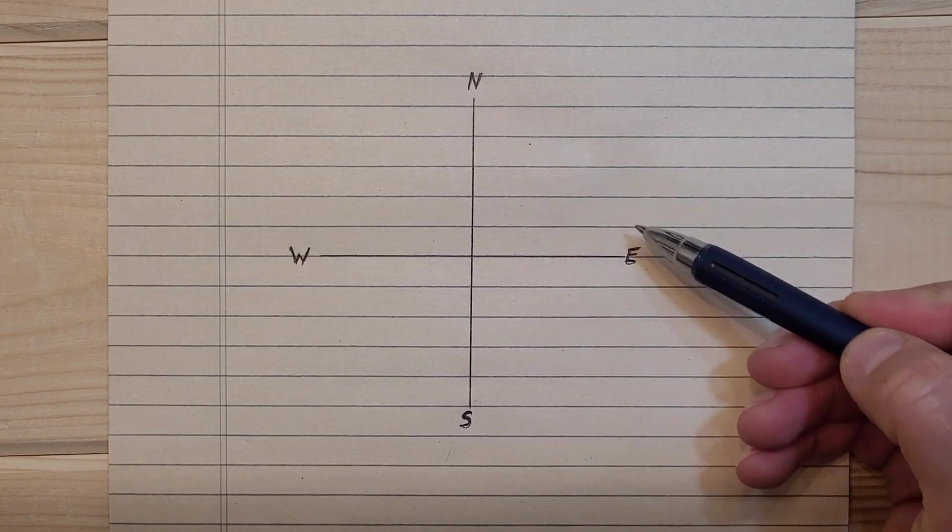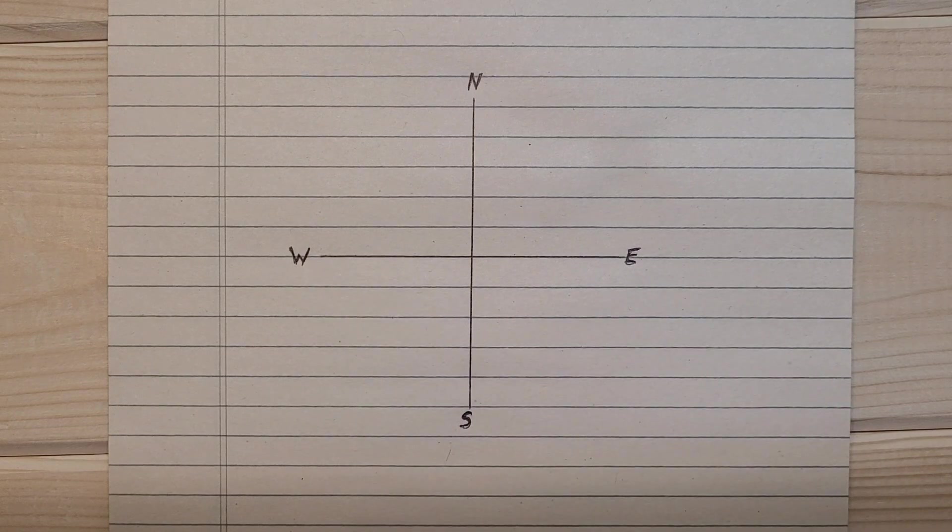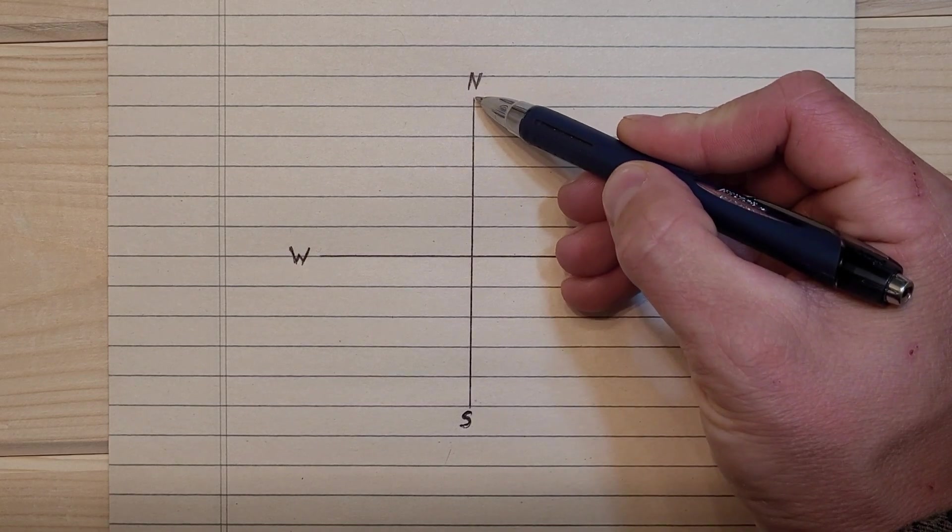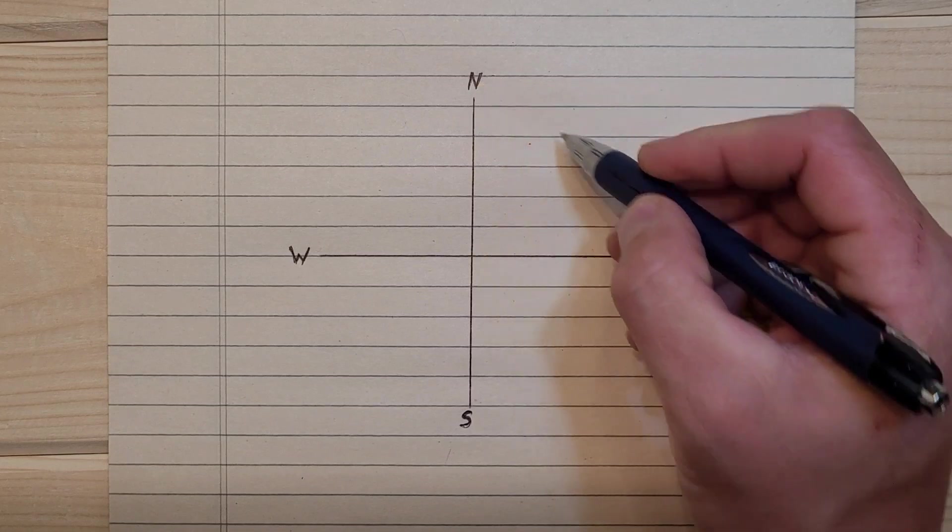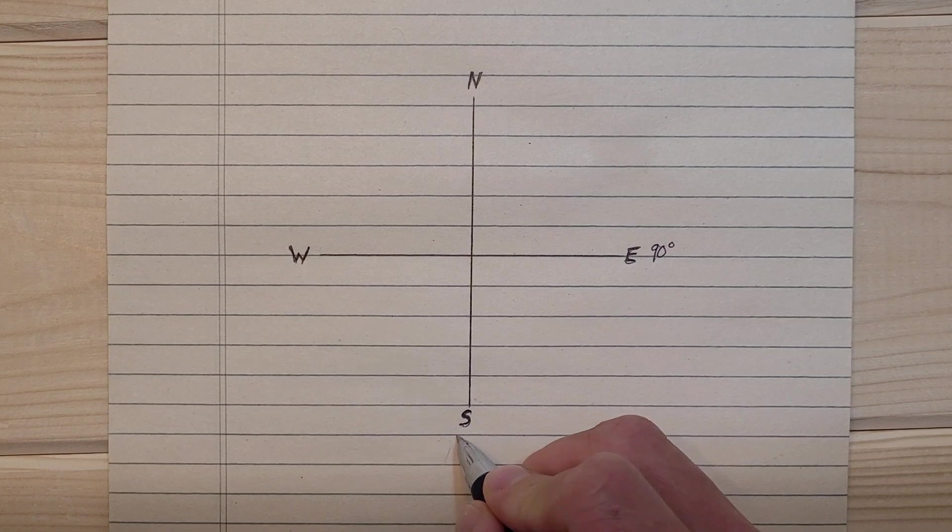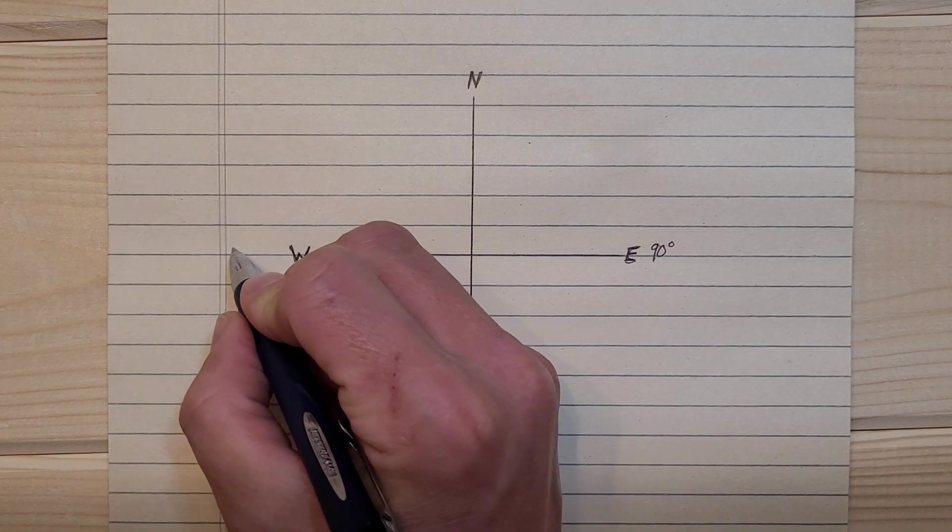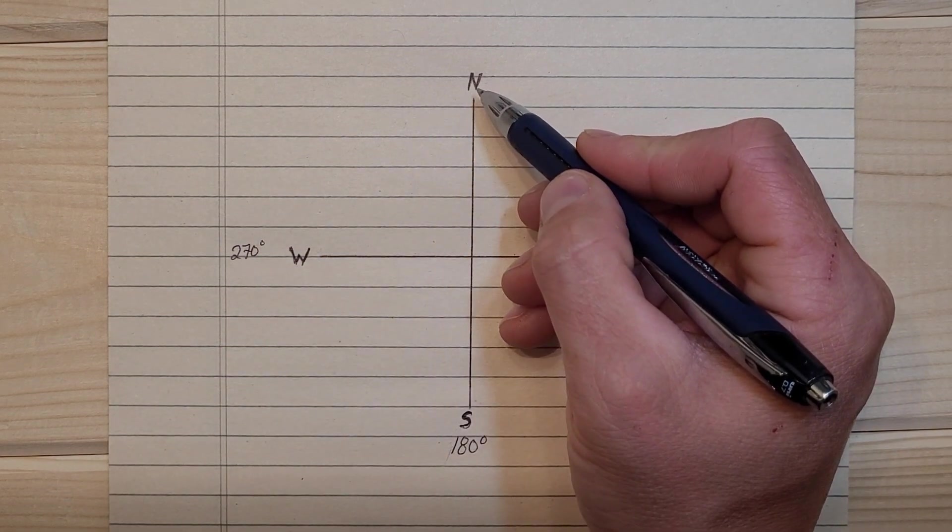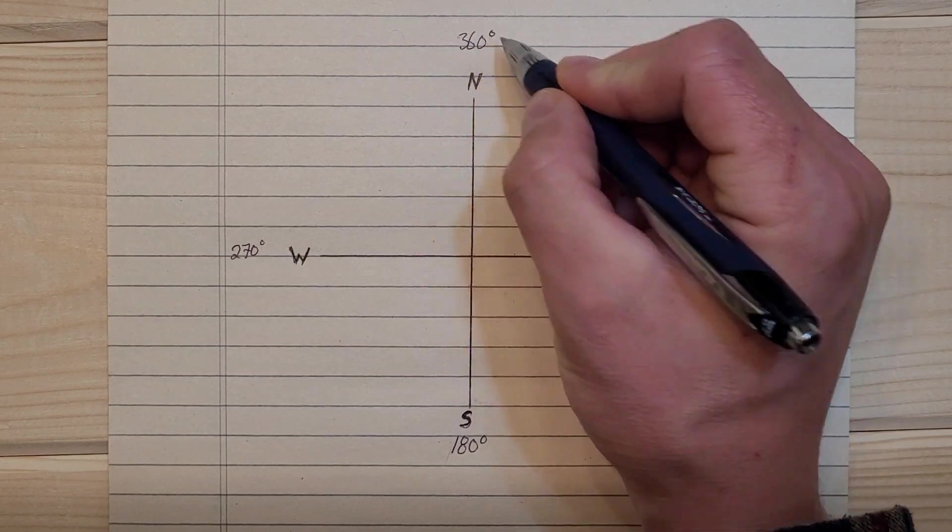We have north, east, south, and west. The way azimuths work is you start here at north and you move in a clockwise direction. So here's zero and it moves to 90 degrees east, and the south is at 180 degrees. West is at 270 degrees, and you work your way back up here to the origin at 360 degrees.